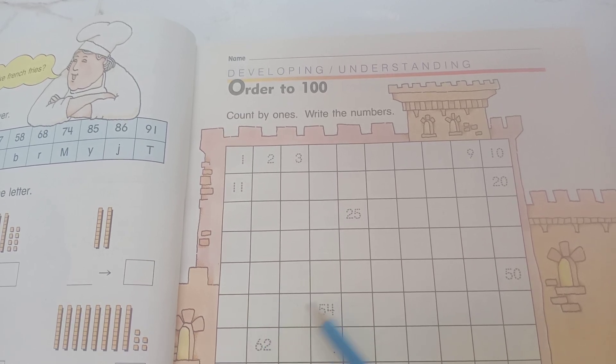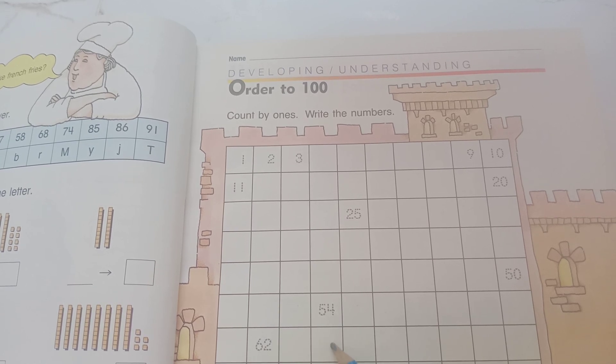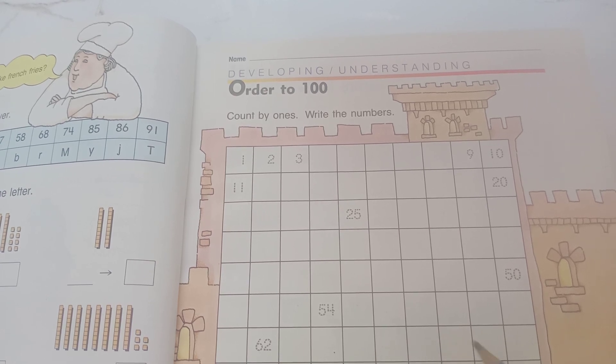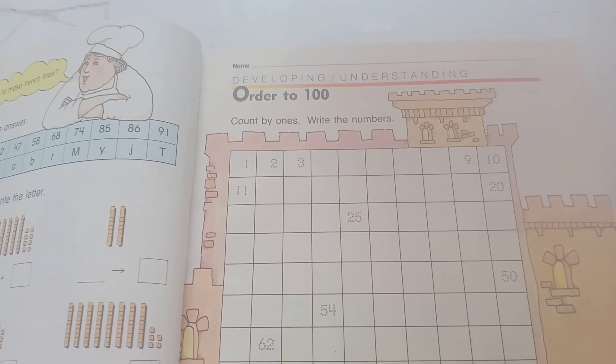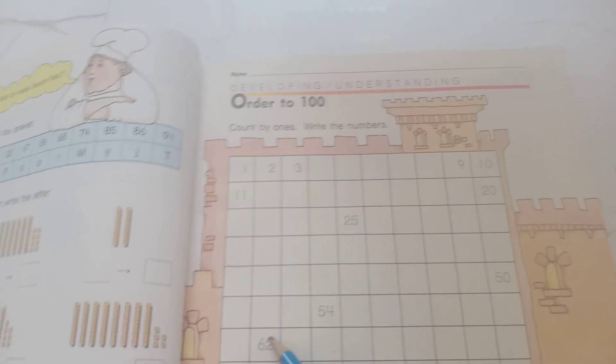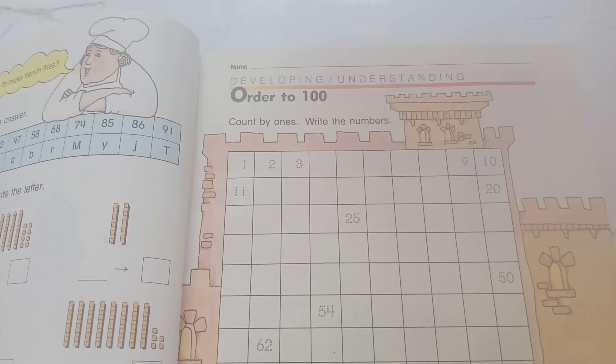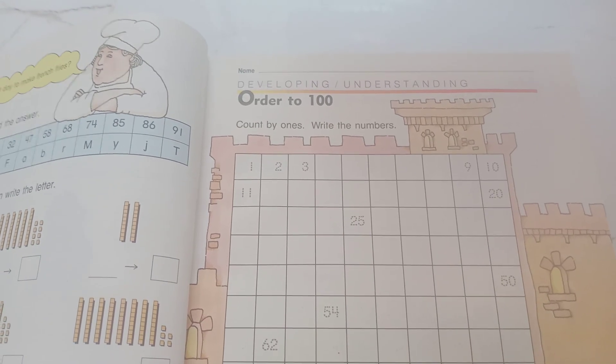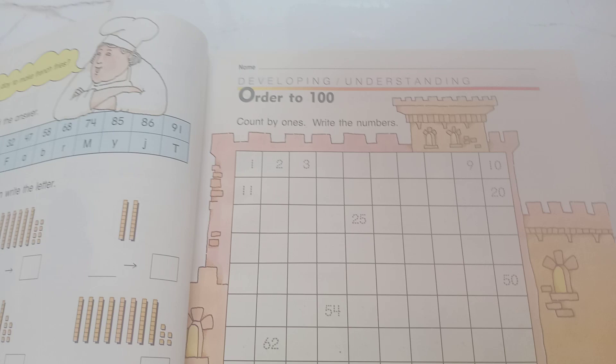56, 57, 58, 59, 60, 61, 62, 63, 64, 65, 66, 67, 68, 69, 70, 71, 72, 73, 74, 75, 76, 77, 78, 79, 80.